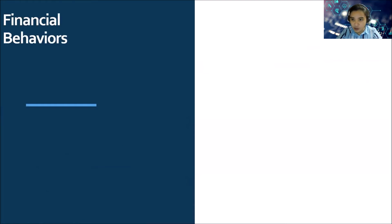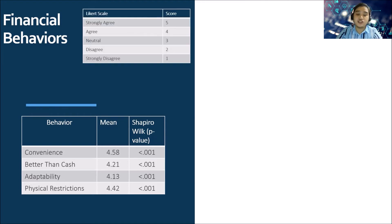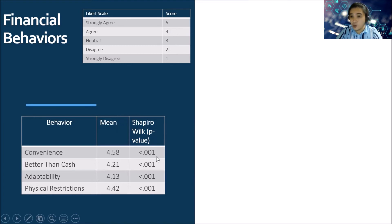For financial behaviors, we asked respondents if they see digital money as convenient, if it is better than cash, if they find it easily adaptable, and whether they use digital money because of physical restrictions due to stay-at-home protocols. Responses were on a Likert scale from 1 to 5 — strongly agree scores 5, agree scores 4, and so on. The mean scores fall under the range of agree to strongly agree. The Shapiro-Wilk p-values are less than 0.001, meaning all answers are statistically significant.